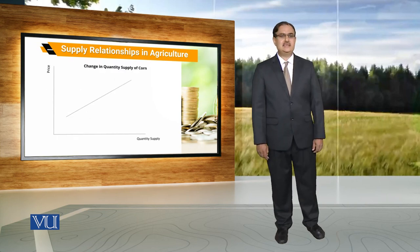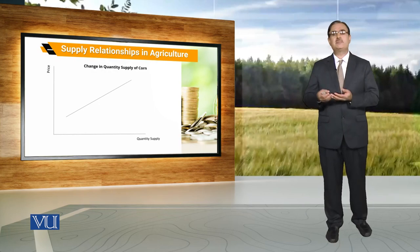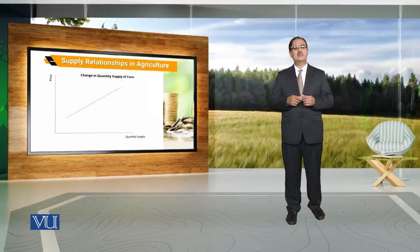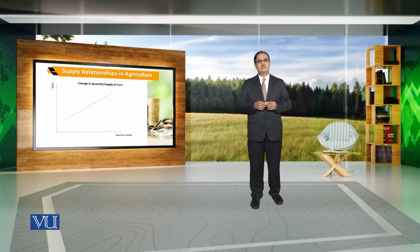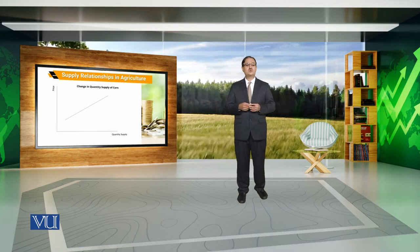To understand this, we discuss the change in quantity supplied of corn. We take quantity supplied on the horizontal axis and price on the vertical axis. This positively sloped curve indicates that there is a positive association between price and quantity supplied.